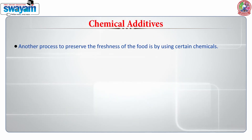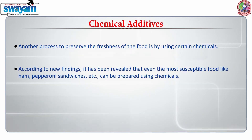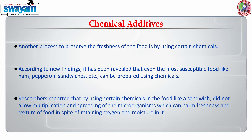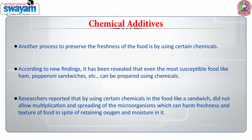Another process to preserve the freshness of food is by using certain chemicals. According to new findings, even the most susceptible food like ham and pepperoni sandwiches can be prepared using chemicals. Researchers reported that using certain chemicals in food did not allow multiplication and spreading of microorganisms that can harm the freshness and texture of food, while retaining oxygen and moisture in it.